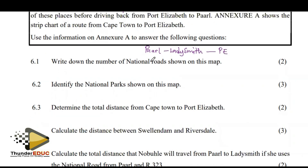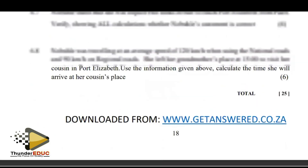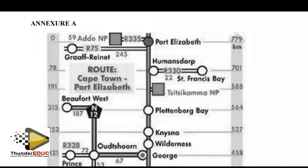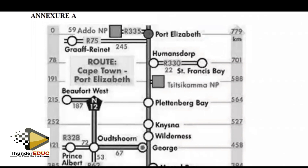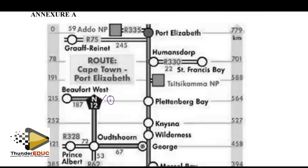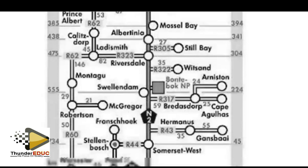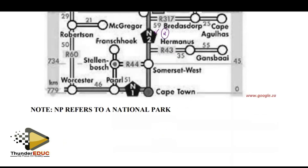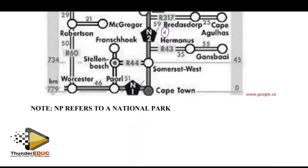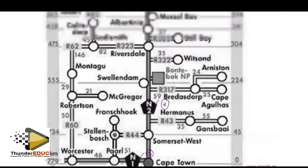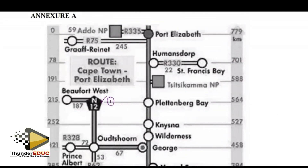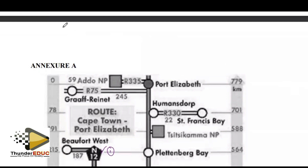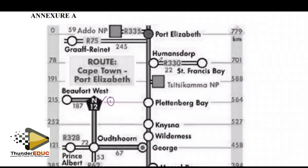Write down the number of national roads shown on the strip map. National roads start with N. We have N12 — that's one. We have N2 — that's two. Then we have N1 — which is three. There are no other national roads. The national roads we see here are three.